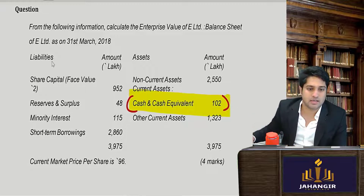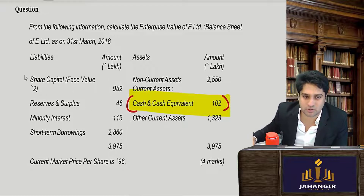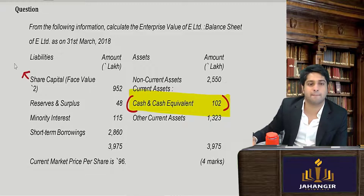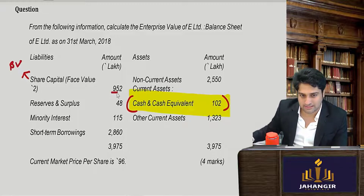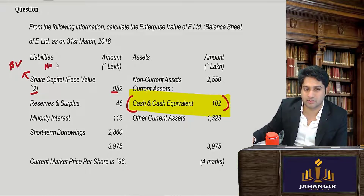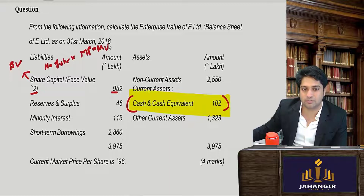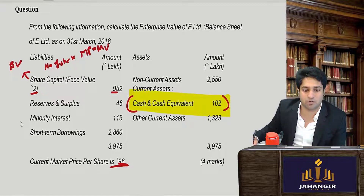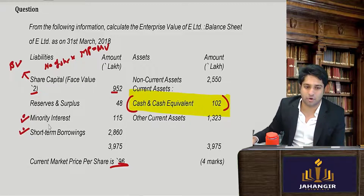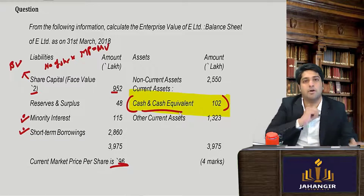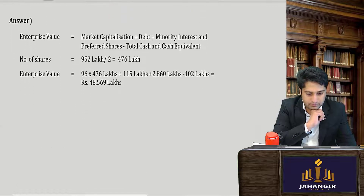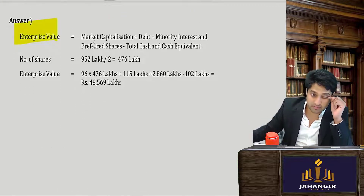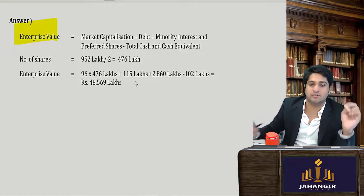The book value divided by the face value gives the number of shares. The number of shares multiplied by the market price gives the market value. Then I will have to pay off the minority shareholders and short-term borrowings — add all of these up, and use the cash to offset. Enterprise value: first find the market value, then do the full calculation. Is this clear?